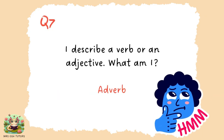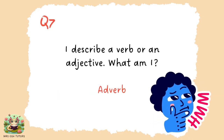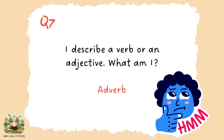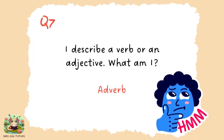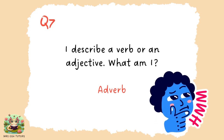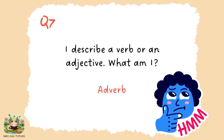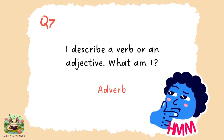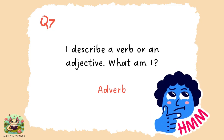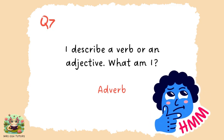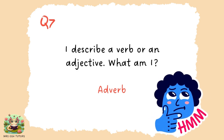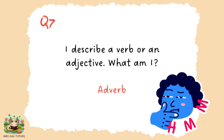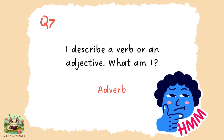Question seven. An adverb can describe either a verb or an adjective. For example, in 'The mouse was very quiet,' quiet is the adjective describing the mouse, and very is the adverb describing the word quiet. Alternatively, in 'The mouse quietly moved,' quietly is the adverb because it's describing the verb moved.